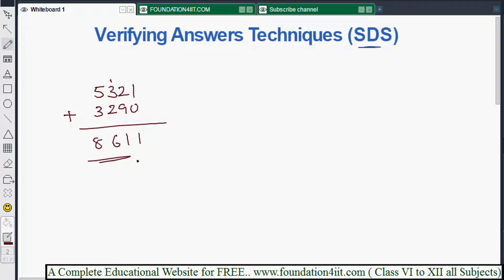Now generally if I add this numbers, 1 plus 9 is 10, carry, then 2 plus 9 plus 1 is 12, carry 1, then 4 plus 2 is 6, then 8. This is 8611, right? So like this, questions when they'll give to verify it's right or wrong.